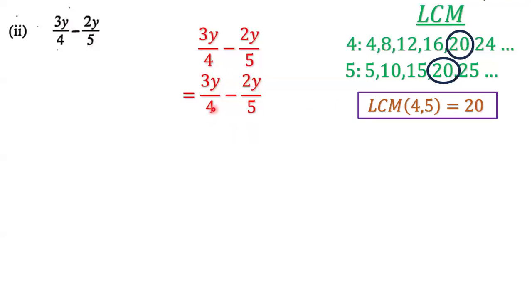Next, we come here and we ask ourselves, what times 4 gives me 20? And the answer is definitely 5. So 4 times 5 is 20. Whatever we do to the bottom, we must do to the top. So we have 3y times 5.